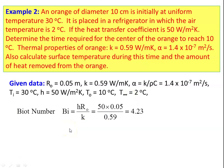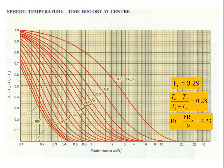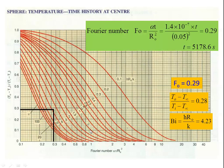Calculate the Biot number: Bi = h·r_o / k = 50 × 0.05 / 0.59 = 4.23. Temperature ratio at center: (T_o − T_∞) / (T_i − T_∞) = (10 − 2) / (30 − 2) = 0.28. From the Heisler chart, with temperature ratio 0.28 and Biot number 4.23, the Fourier number is 0.29. From the Fourier number: Fo = α·t / r_o² = 0.29, so 1.4 × 10⁻⁷ × t / (0.05)² = 0.29, giving time = 5178.6 seconds.